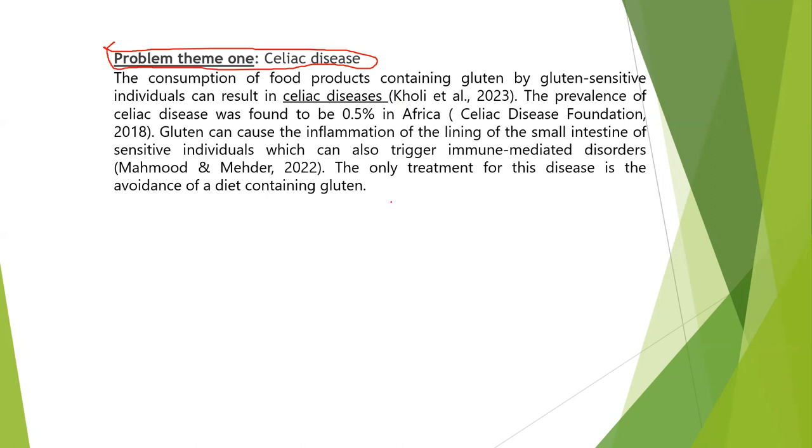This is my paragraph in the final document: 'The consumption of food products containing gluten by gluten-sensitive individuals can result in celiac diseases. The prevalence of celiac disease was found to be 0.5% in Africa. Gluten can cause inflammation of the lining of the small intestine in sensitive individuals, which can also trigger immune-mediated disorders. The only treatment for this disease is the avoidance of diet containing gluten.' The objective of my research will be to develop gluten-free cookies — you can see that the objective is directly linked to the problem the research wants to resolve. This is the end of the lecture; thank you and I wish you all the best.